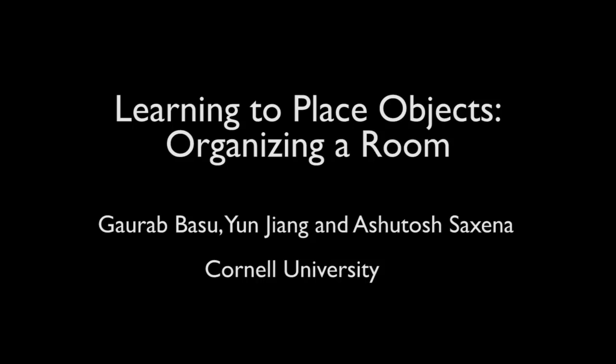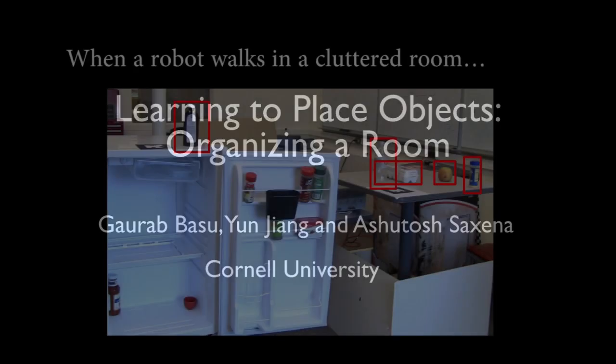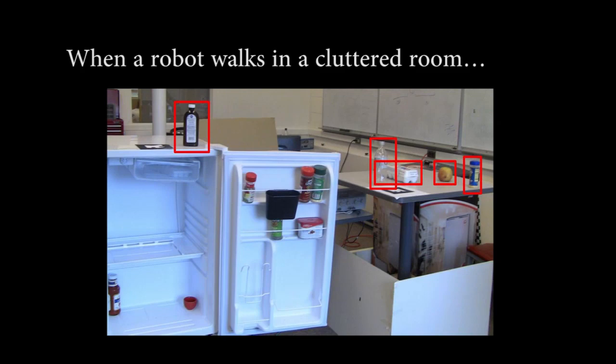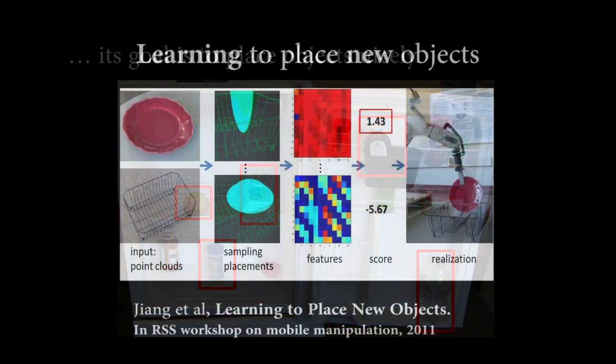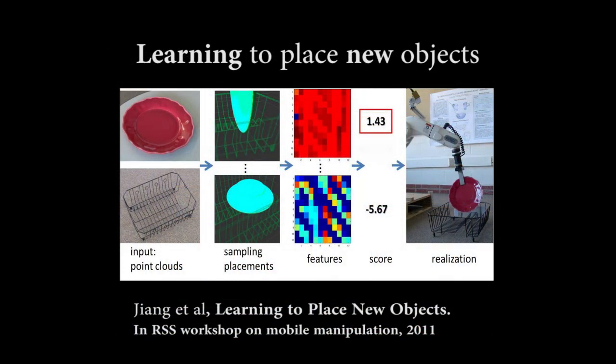In this work, we consider the problem of how to arrange and place objects in a scene. When a robot walks into a disorganized room, its goal is to place these objects stably as well as in semantically preferred locations. Given an object and a placing area, both in the format of point clouds, our goal is to find out the best way of placing them.